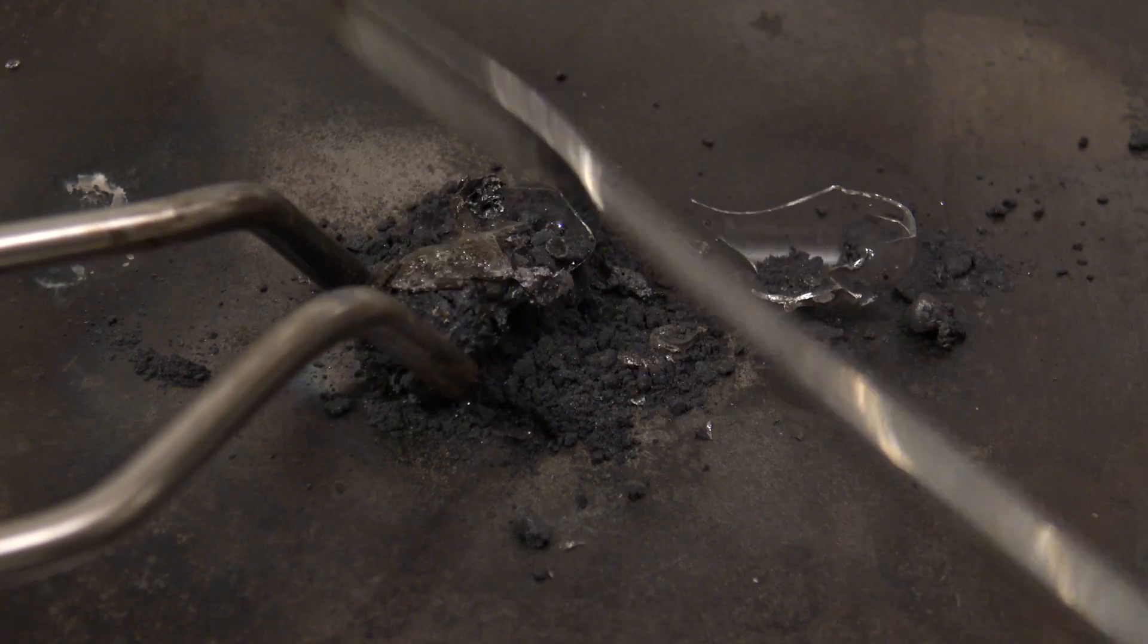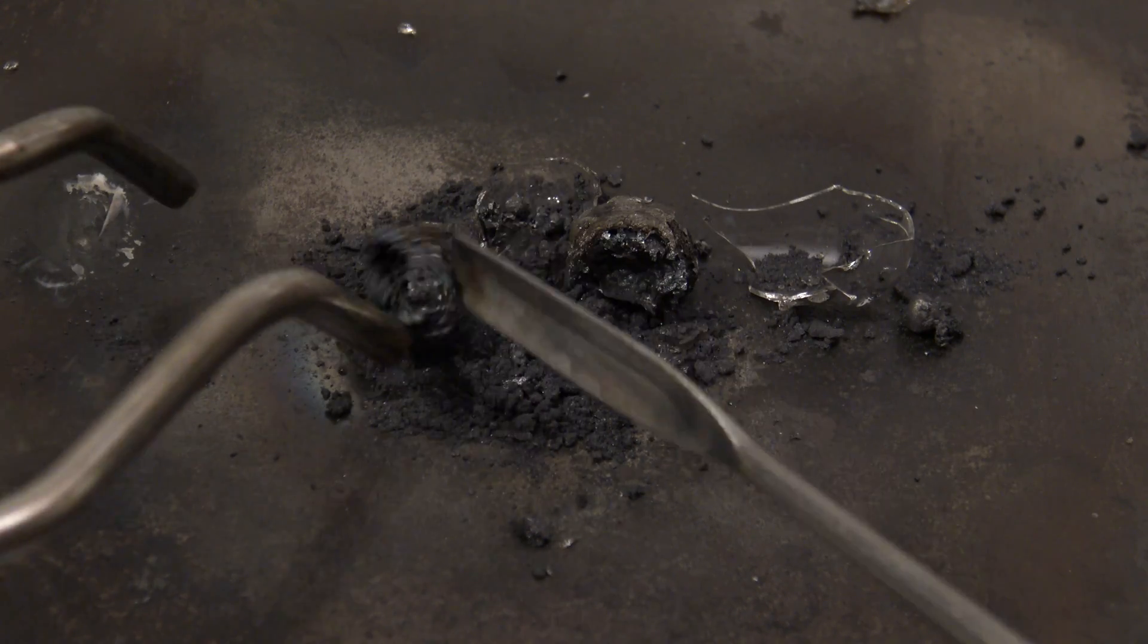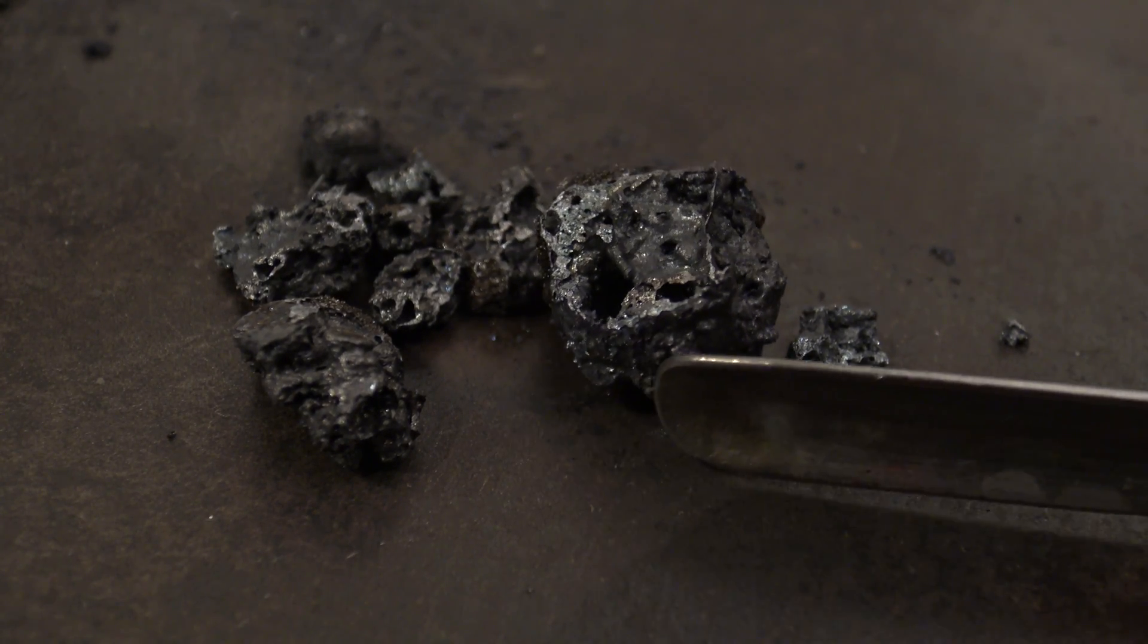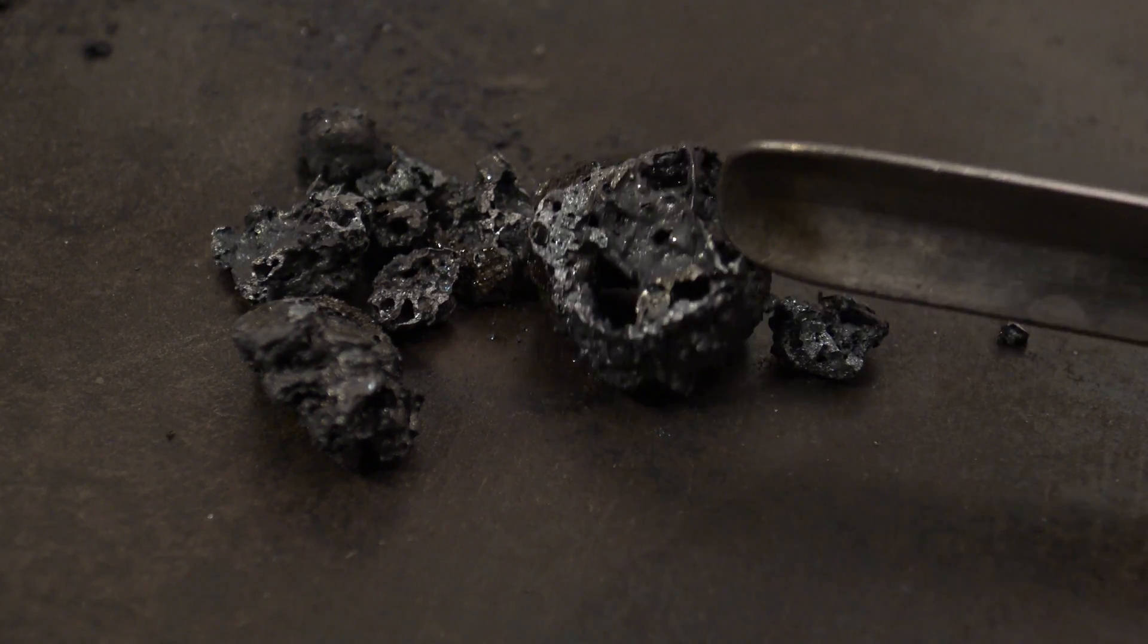The calcium disilicide was quite hard, but also brittle, which made it easy to break it up. Surprisingly, it had still formed crystals on the inside, despite all the circumstances.